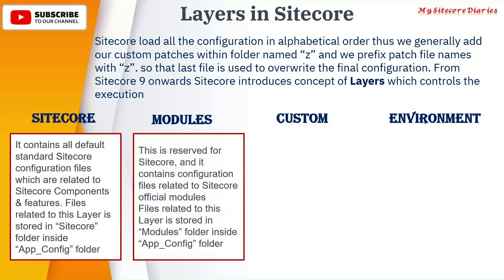The Modules layer is reserved for Sitecore and contains configuration files related to official Sitecore modules. Whatever new modules Sitecore adds, those module configurations go into the Modules layer. Files related to this layer are stored in the modules folder inside app_config. So both the Sitecore layer and Modules layer are reserved for Sitecore — all default configuration should go there.